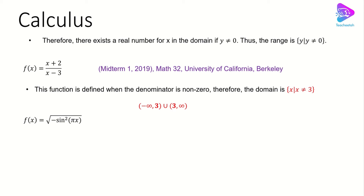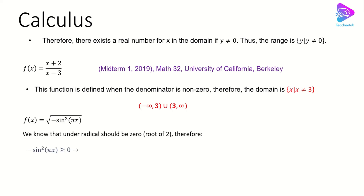As you know, whatever we have inside this square root should be greater than or equal to zero. So from there we can write: negative sine squared(πx) should be greater than or equal to zero.